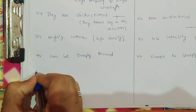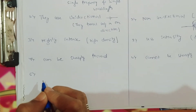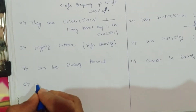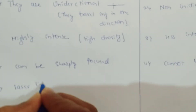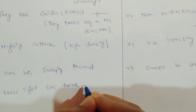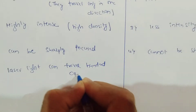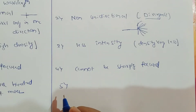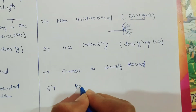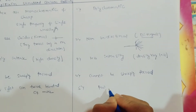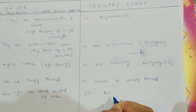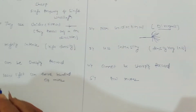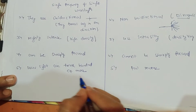The fifth important property is that laser light can travel hundreds of meters. But in the case of ordinary light, we observe that ordinary light can travel only a few meters.